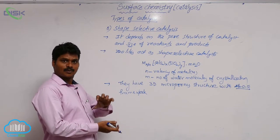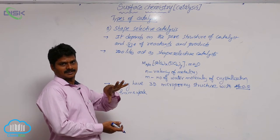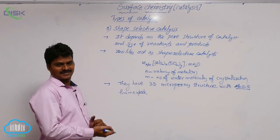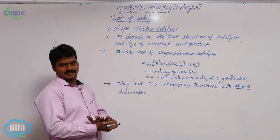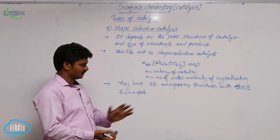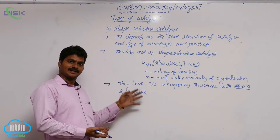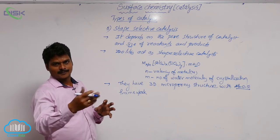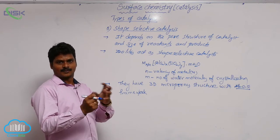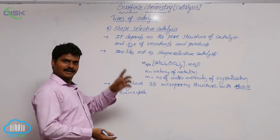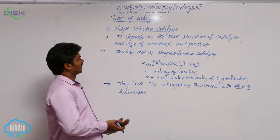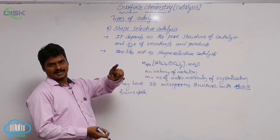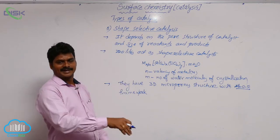The catalysis reaction depends on the size of the pore structure. Zeolites have a honeycomb-like structure — just like pores in a honeycomb, zeolites as catalysts also have a pore structure. Based on this pore structure and the size of reactants and products, the catalysis reaction occurs. If the shape of the pore structure and the size of the reactant are similar, only then the reaction takes place.